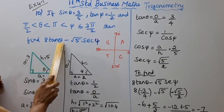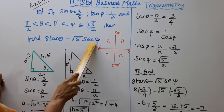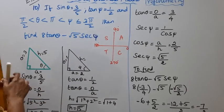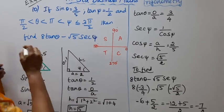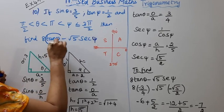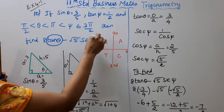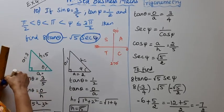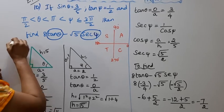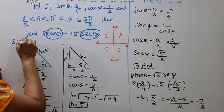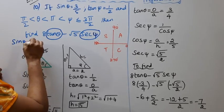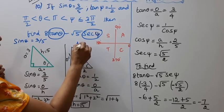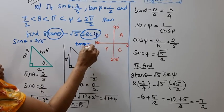We need to find 8 tan θ minus root 5 times sec φ. In order to find this, we are given sin θ = 3/5 and tan φ = 1/2.